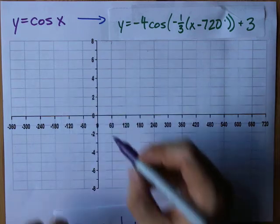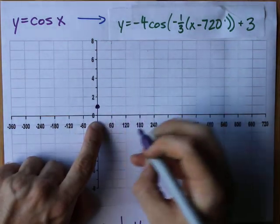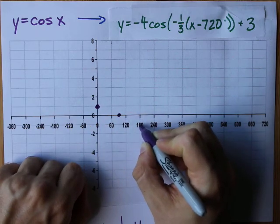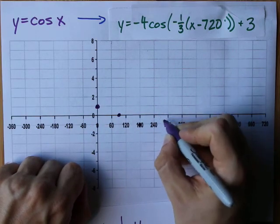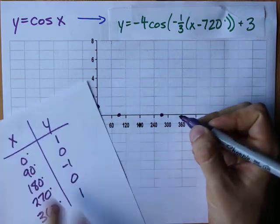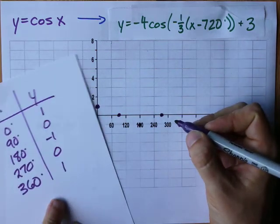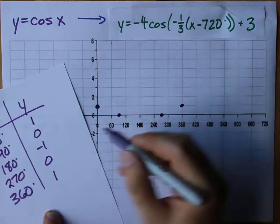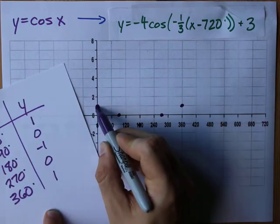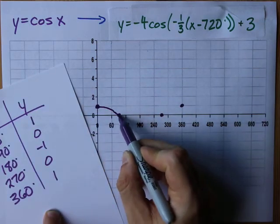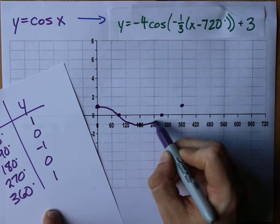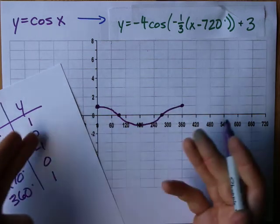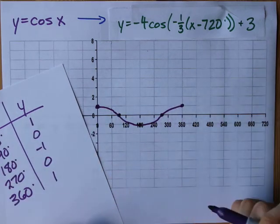Let's quickly graph that: (0, 1), (90, 0), (180, −1), (270, 0), and (360, 1). It starts at its maximum, goes down to its middle, back down to its minimum, then it comes roaring back, ready to repeat again. That's one cycle of cosine.